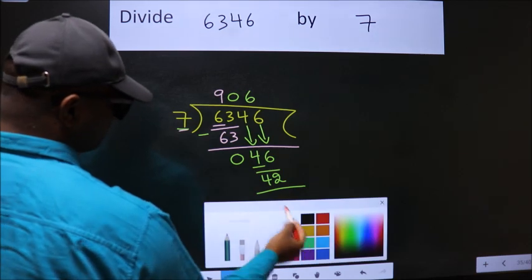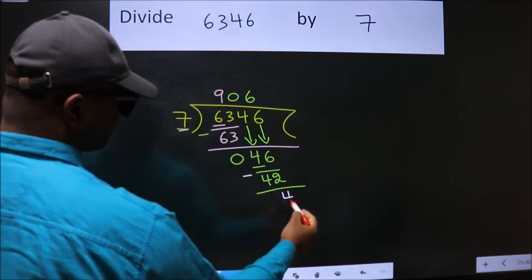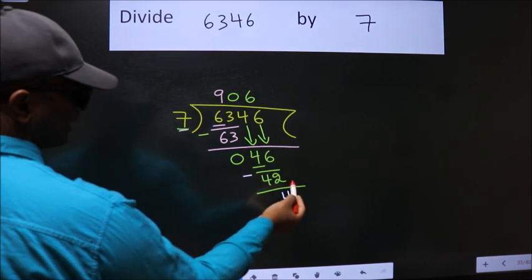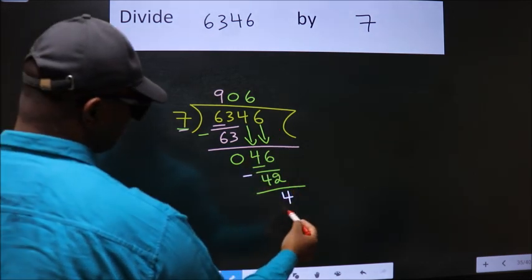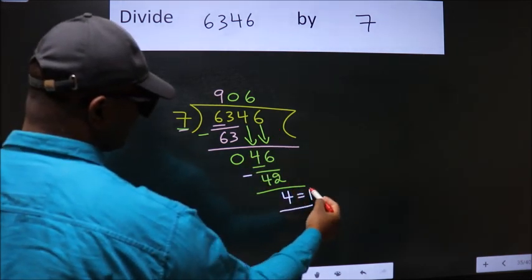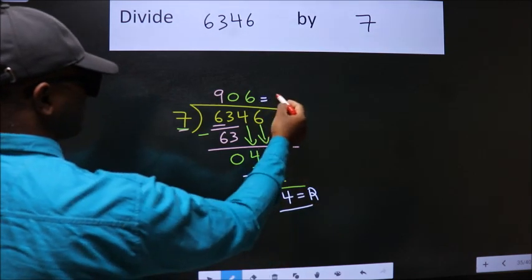Now we subtract. We get 4. No more numbers to bring it down. So we stop here. This is our remainder. This is our quotient.